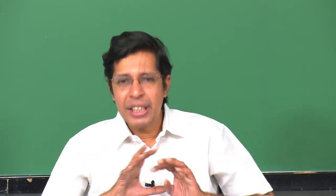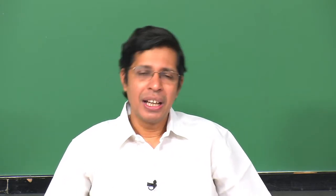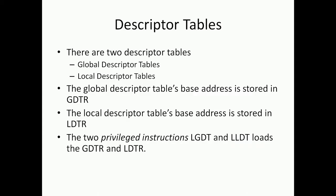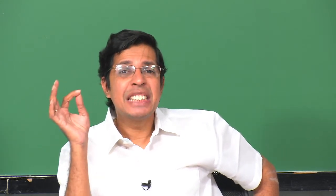How are we going to achieve this? I will go step by step. First, there are two descriptor tables: the Global Descriptor Table and the Local Descriptor Table. The GDT's base address is stored in GDTR, and the LDT's base address is stored in LDTR. The way to change those addresses is using two instructions, namely LGDT and LLDT, and these are privileged instructions that can only be executed by privilege level 0 code.